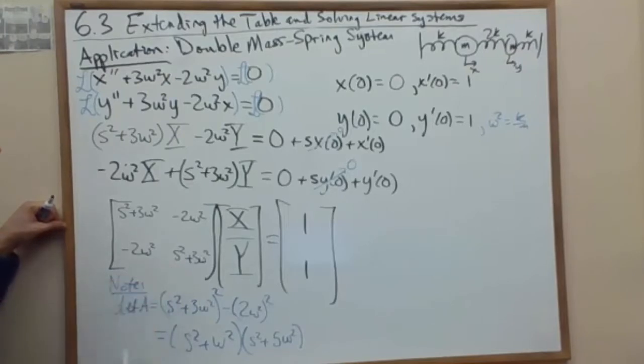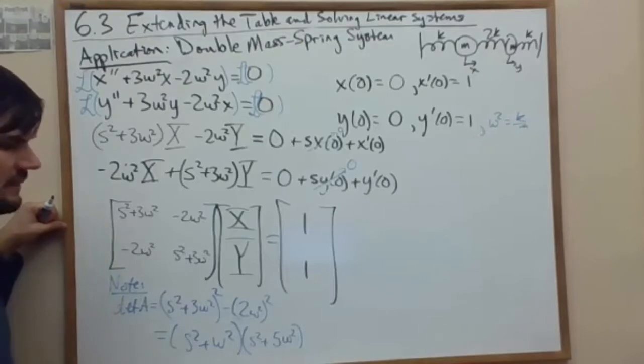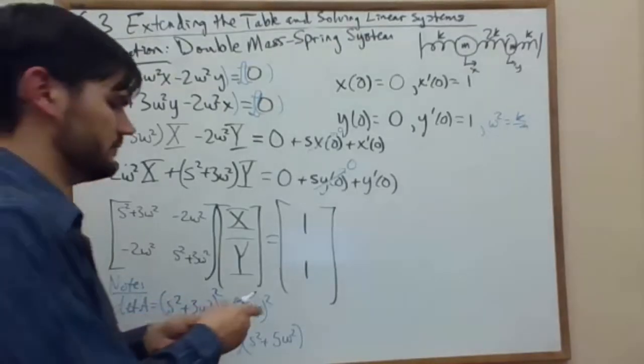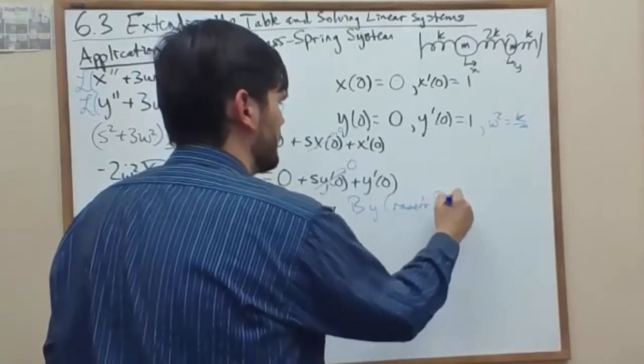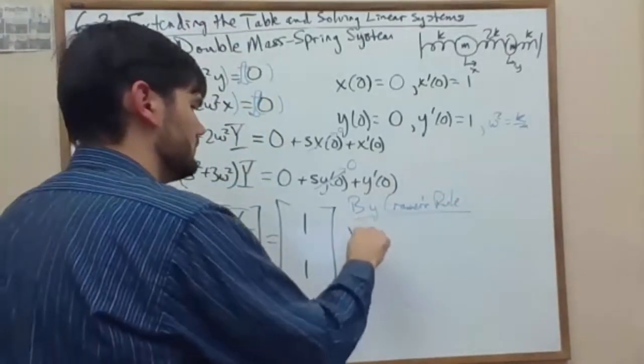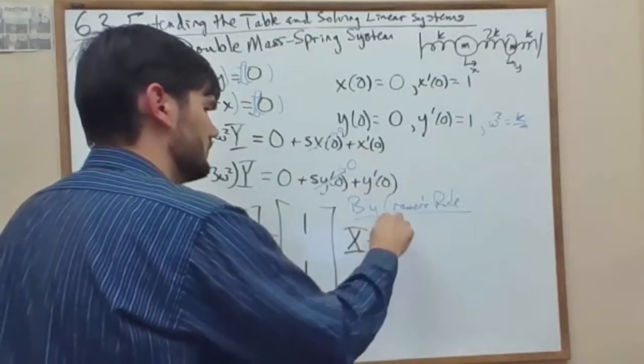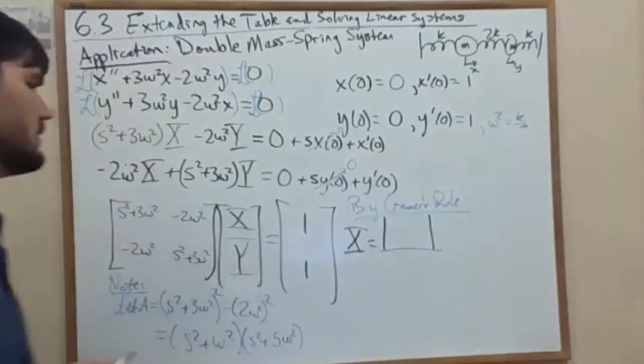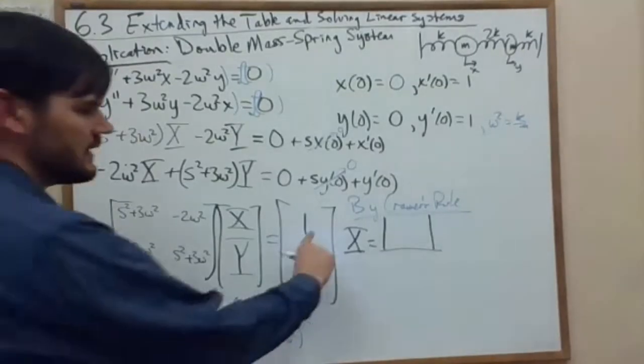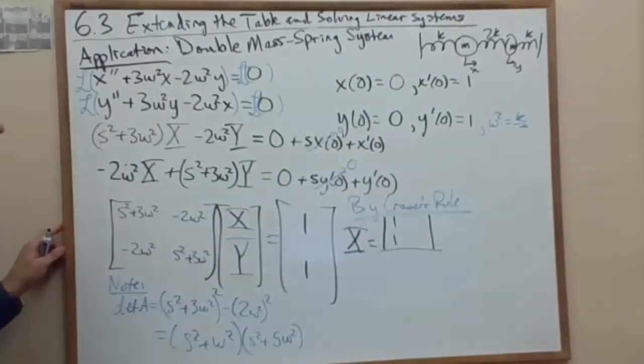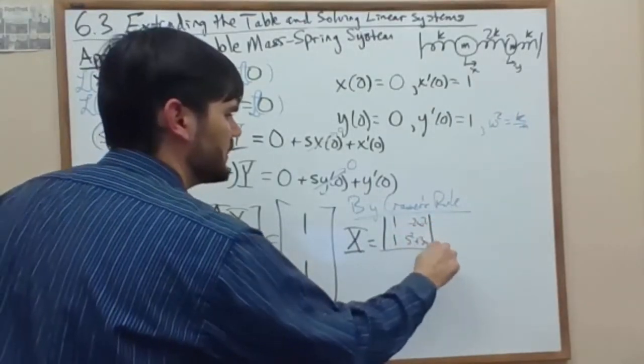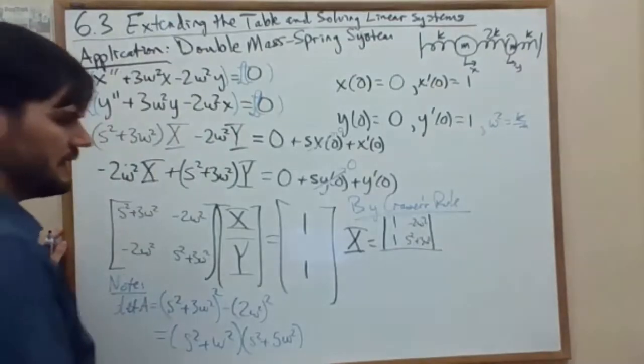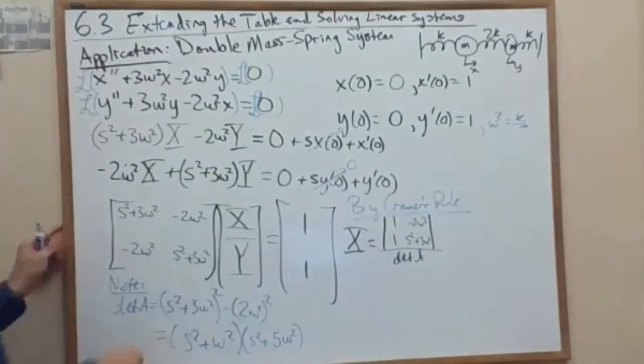Okay, so that's the determinant of our coefficient matrix. For Cramer's rule, we take the modified determinants divided by this determinant. So the first modified determinant has a 1 and 1 in our first column and a minus 2 omega squared and an s squared plus 3 omega squared on top. And then the determinant of A on the bottom, which we just computed.